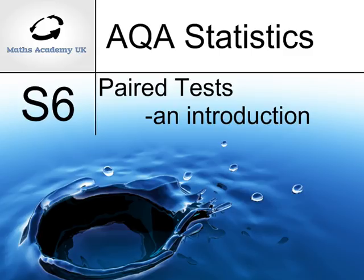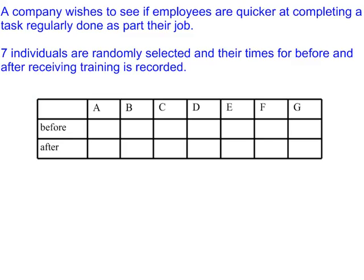An introduction to paired hypothesis tests. A company wishes to see if employees are quicker at completing a task regularly done as part of their job. Seven individuals are randomly selected and their times before and after receiving training are recorded. So the data is in pairs — Employee B has their data here for before training and after training. There are seven pairs of data.